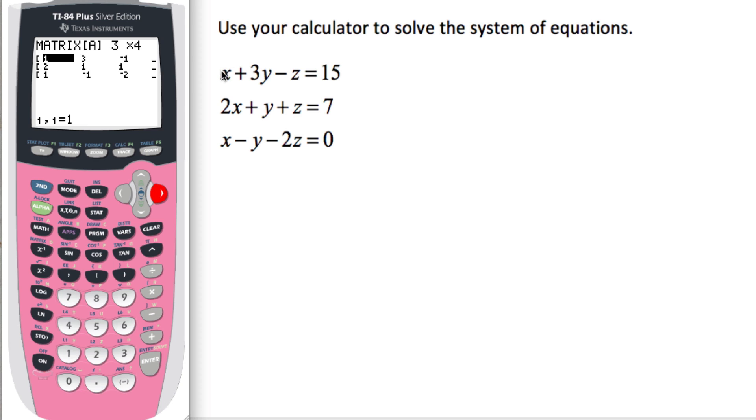And then we can enter in the coefficients of each of these variables, so 1x, so 1, 3, minus 1. When you're typing in minus 1, make sure that you push the negative button, not the minus button. And then over here, you see that the last column is 15, 7, 0.